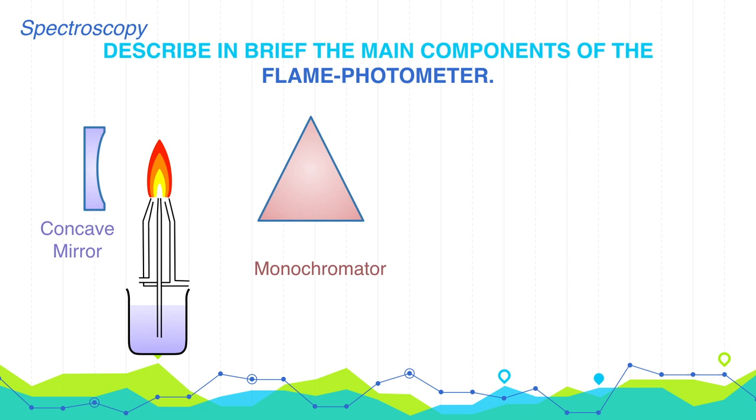Then it comes focusing convex lens. It collects the radiations coming from the monochromators and allows them to fall on the detector.